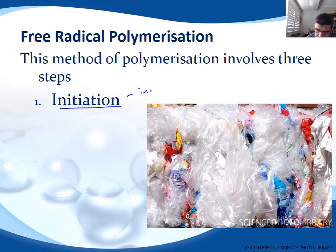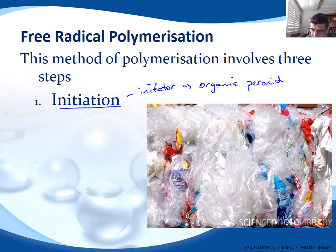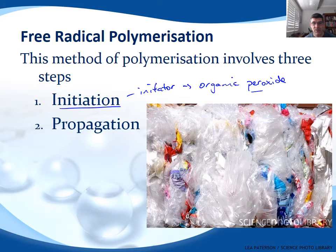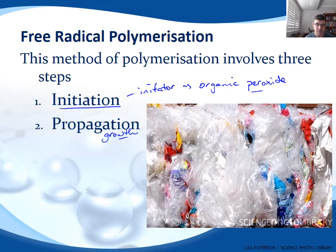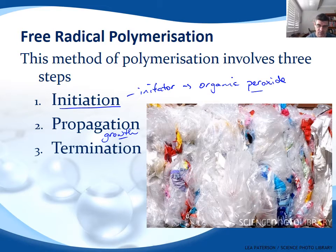Those three steps involve initiation — there's an initiator, which is often an organic peroxide. Then propagation, which is just another word for growth — as the polymer chain increases. And then termination, where we actually need to stop the process at some point and produce our final product.